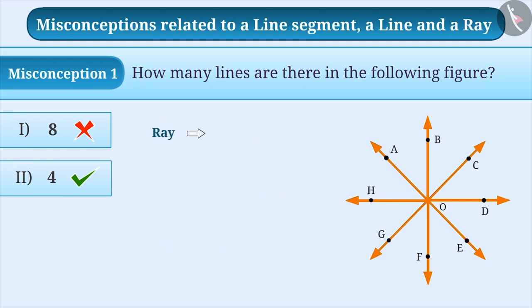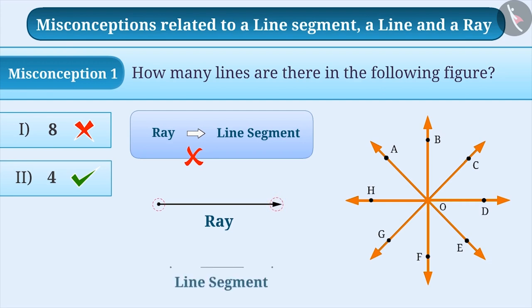Sometimes, students also think that a ray can also be a line segment. But this also is not the correct understanding. The starting position of a ray is fixed, which is represented by the starting point. But its end is not fixed. That is why, an arrow is made at the other end of the ray.